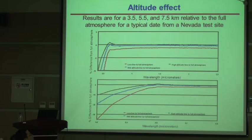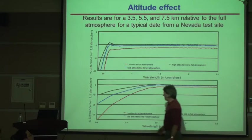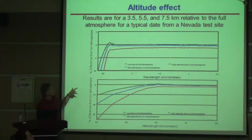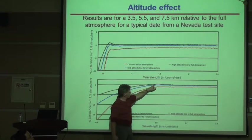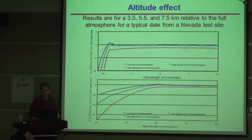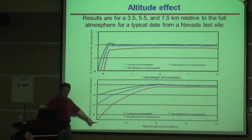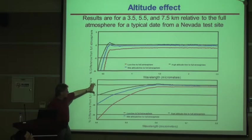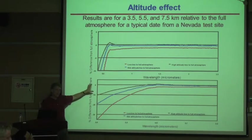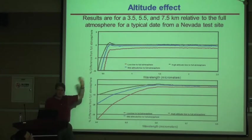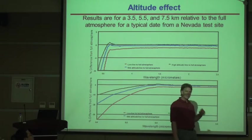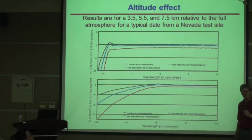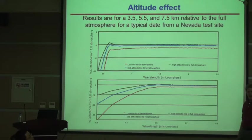A zero percent difference means you get everything you want. At high altitude, at short wavelengths, you can never get closer than 10 percent. But think about it: if I fly at 7.5 kilometers above my surface, I have 90 percent of photons accounted for. I could make a 100% error in my radiative transfer calculations and only have a 1% uncertainty in the top-of-atmosphere calculation — because if I have a 10% residual and make a 10% error in that residual, I only get a 1% final uncertainty.